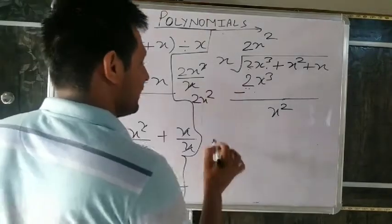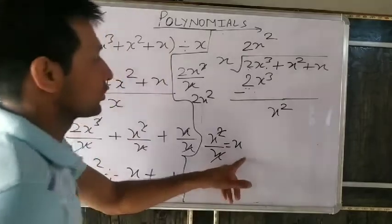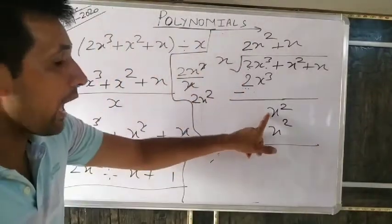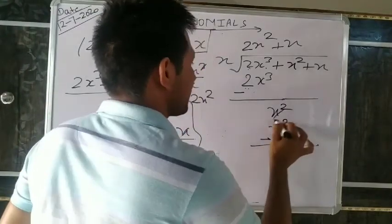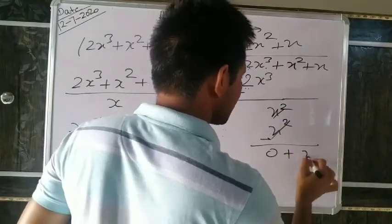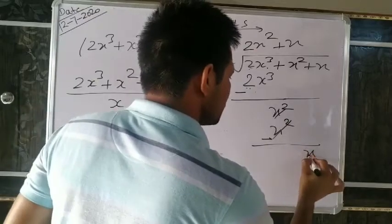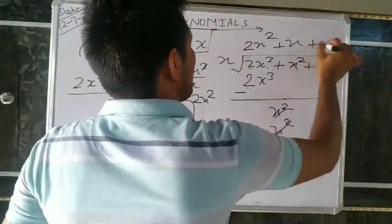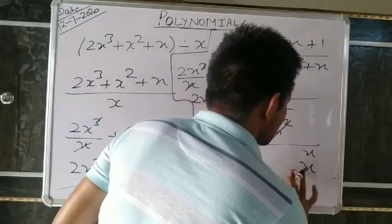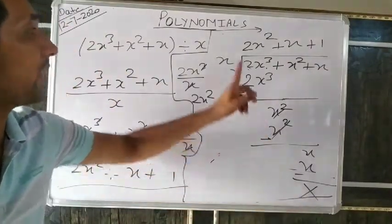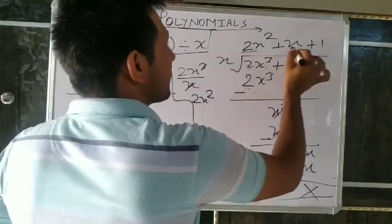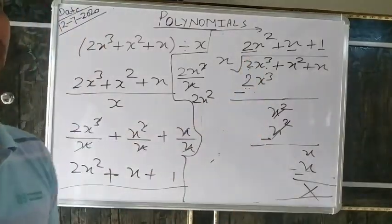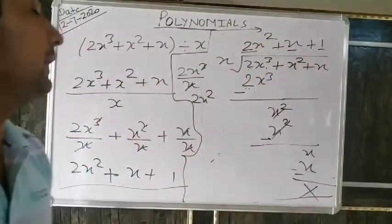Now 0 plus x remains. Next, what number when multiplied by x gives x? That is 1. Write plus 1 in the quotient. 1 times x is x. Change sign: x minus x equals zero. So the final answer when dividing 2x³+x²+x by x is 2x²+x+1. This is how we divide two polynomials using the long division method.